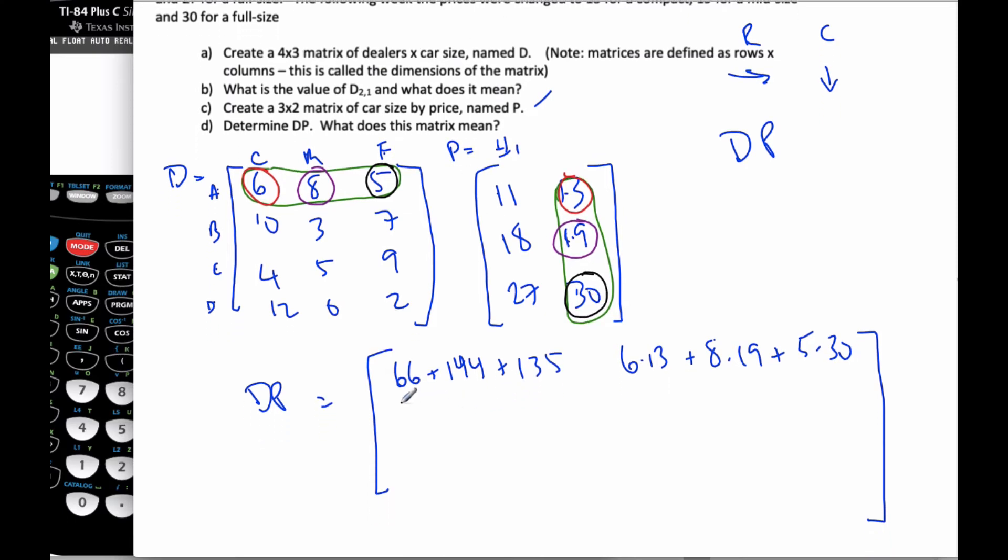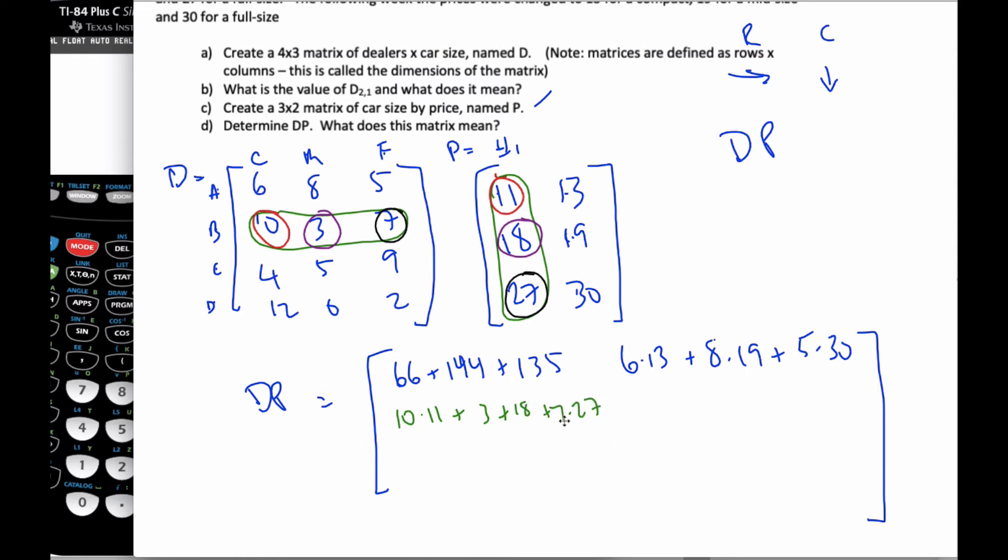If I want to go to the second row, first column, I have to be in the first column. Here's my first column. And if I want the second position, then I must change to the second row. And so when I multiply, it's going to be 10 times 11, plus 3 times 18, plus 7 times 27, and so on and so forth. When we have big numbers it's harder to do.